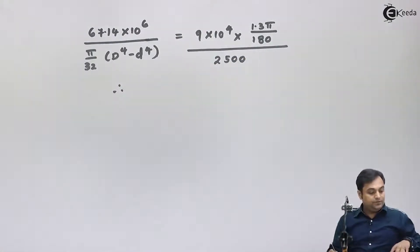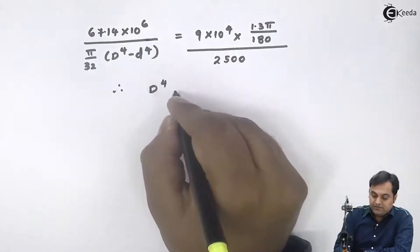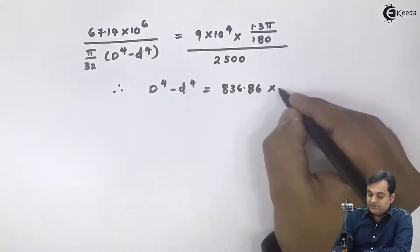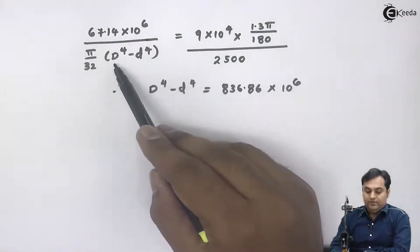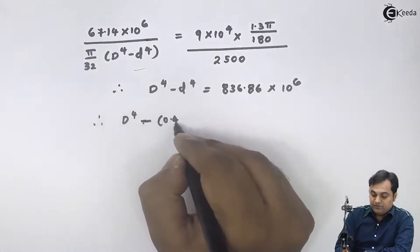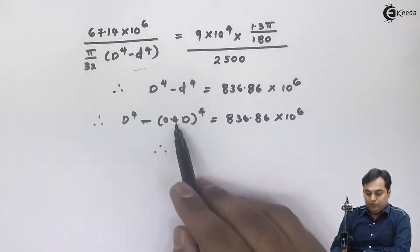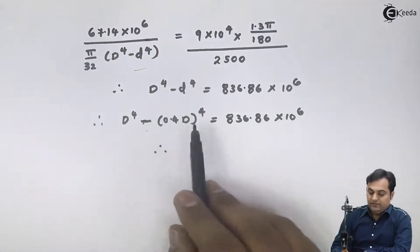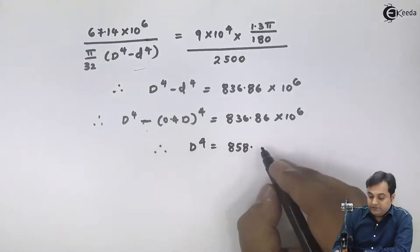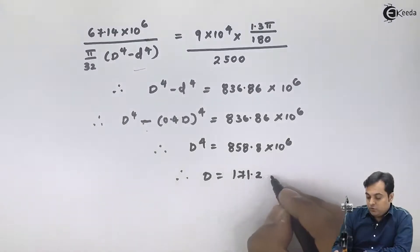Calculating all terms and keeping D⁴ − d⁴ on one side, I get D⁴ − d⁴ = 10.86 × 10⁶. Substituting d = 0.4D, I get (1 − 0.4⁴) × D⁴ = 858.8 × 10⁶, and taking the square root twice gives the diameter as 171.2 mm. I will keep this as equation 2.